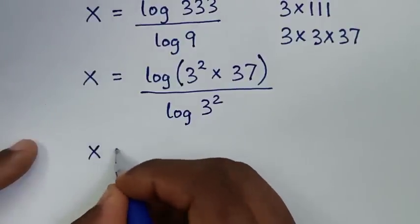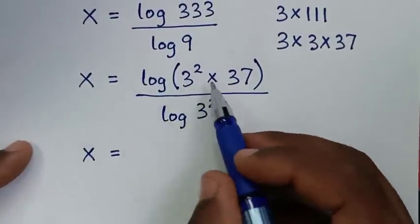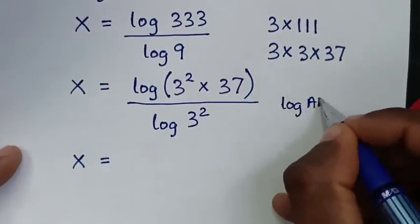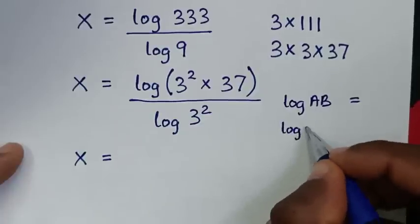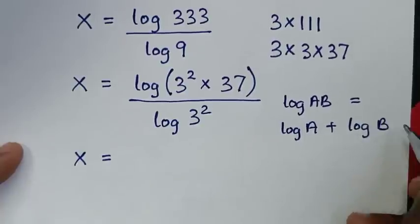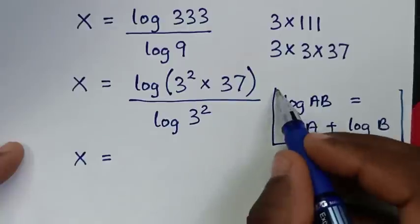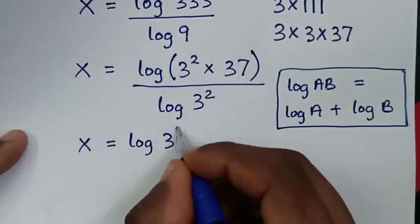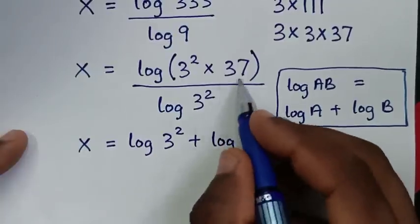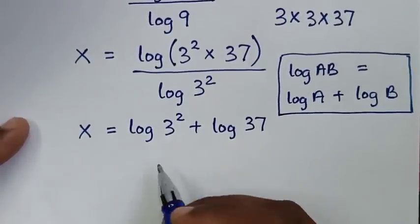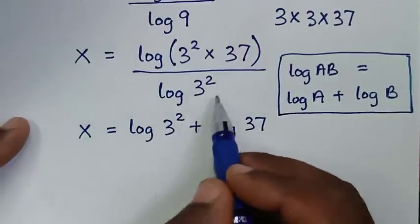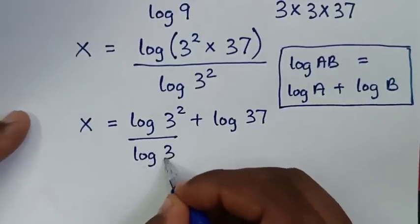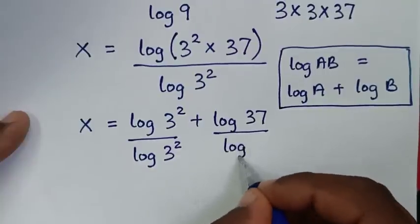Then it will be x is equal to log of 3 squared times 37. This is in the form of log of A times B, which is equal to log A plus log B. So we'll apply this rule, giving us log of 3 squared plus log of 37, all divided by log of 3 squared.